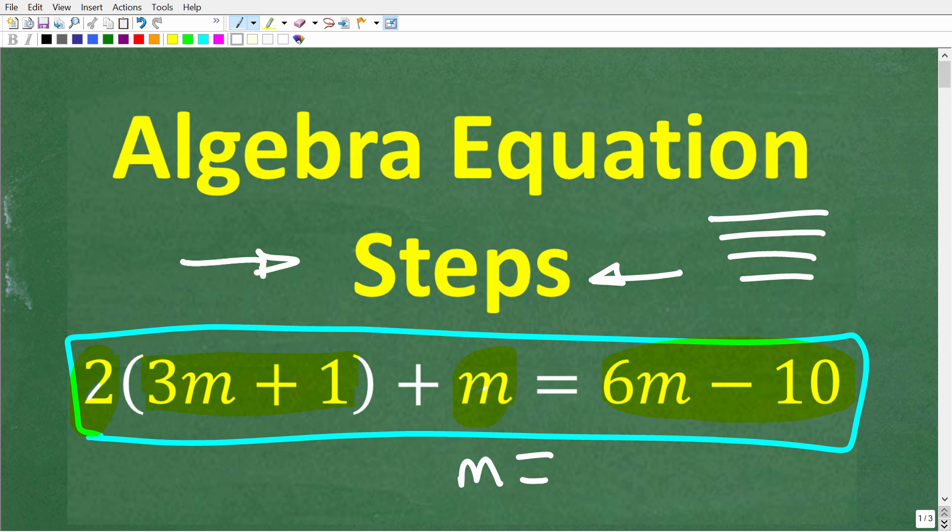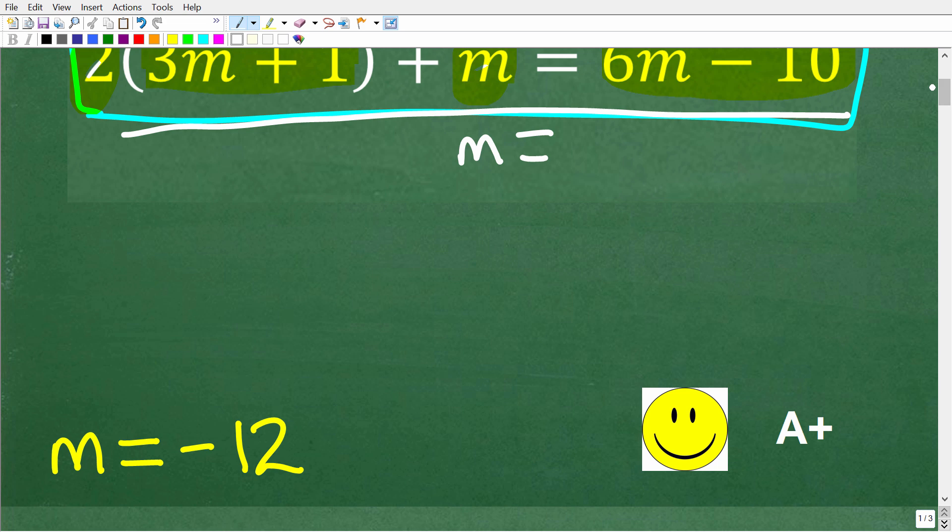Then of course, I'm going to show you the exact steps that you want to take, not only to solve an equation like this, but pretty much all equations in algebra. So let's take a look at the solution. The correct answer here is m is equal to negative 12. Now, if you got this right, well, you definitely get a happy face and an A plus.